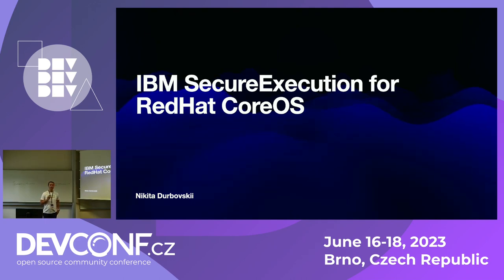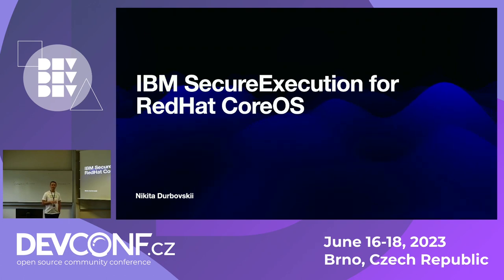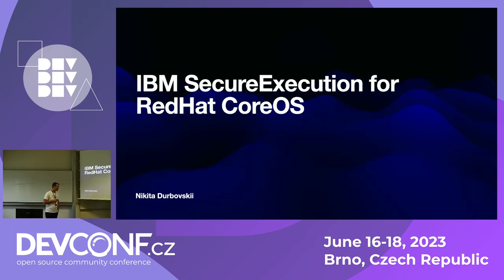CoreOS is a small operating system — it's efficient, secure, and designed to run containers in cloud environments. Ignition is a configuration tool for CoreOS. It runs in initramfs time and takes care of system configuration. You have your config, you give it to Ignition, and after installation or provisioning you have your own CoreOS instance.